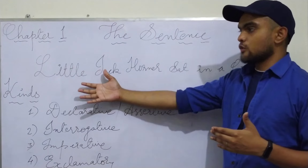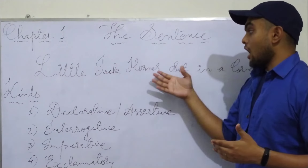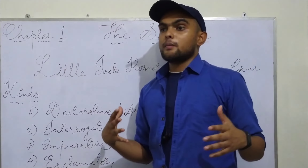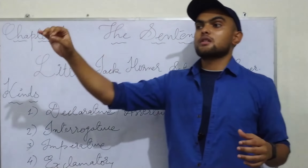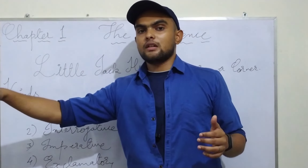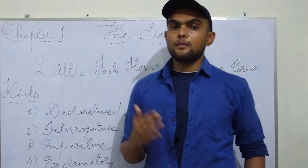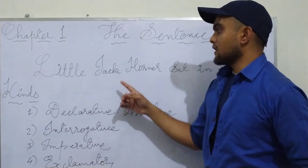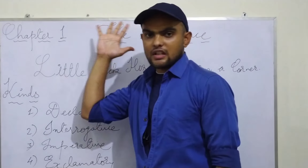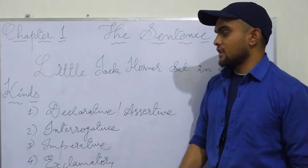We want to improve the instances we give for sentences. 'Little Jack Horner sat in a corner.' Previously we were using only short two or three words to make a declarative sentence. No — hereafter you will be focusing more like this: 'Little Jack Horner sat in a corner.' That is about sentences, and you know there are kinds of sentences — there are mainly four kinds.